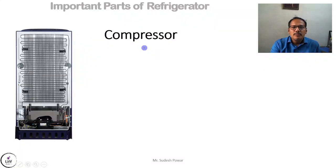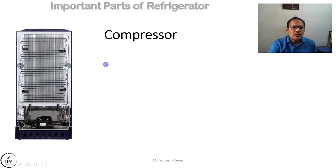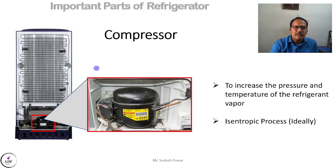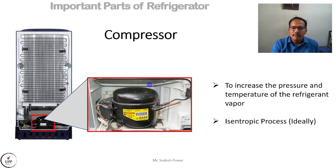The first and most important thing in a refrigerator is the compressor. If you see the back side of the refrigerator at the bottom, you can see one black box — that is the compressor. This is a hermetically sealed compressor. There are different types of compressors, but normally in domestic refrigerators we use hermetically sealed compressors.